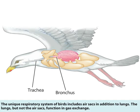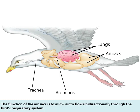The unique respiratory system of birds includes air sacs in addition to lungs. The lungs, but not the air sacs, function in gas exchange. The function of the air sacs is to allow air to flow unidirectionally through the bird's respiratory system.